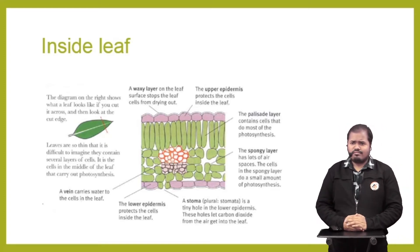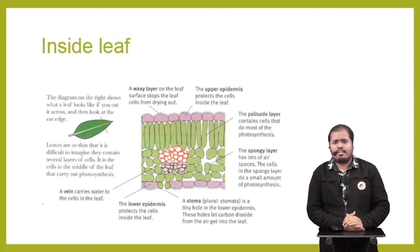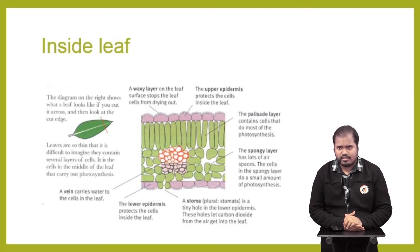The first layer in a leaf is the palisade layer, which contains cells that do most of the photosynthesis. This means the palisade cells contain the most chloroplasts.